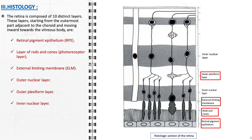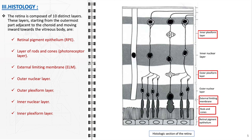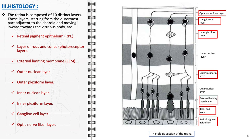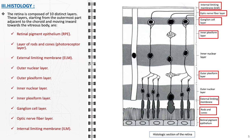6. Inner nuclear layer, containing the cell bodies of bipolar, horizontal, and amacrine cells. 7. Inner plexiform layer, where bipolar cells synapse with ganglion cells. 8. Ganglion cell layer, consisting of the cell bodies of ganglion cells. 9. Optic nerve fiber layer, composed of axons from the ganglion cells forming the optic nerve. 10. And the internal limiting membrane (ILM), the boundary layer adjacent to the vitreous humor.